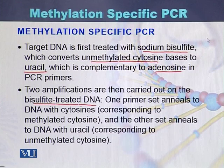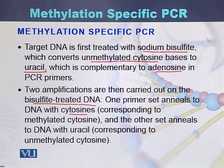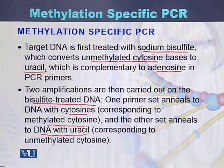One primer set anneals to DNA with cytosines, corresponding to methylated cytosines. The other set of primers anneals to DNA with uracil, which corresponds to unmethylated cytosine.